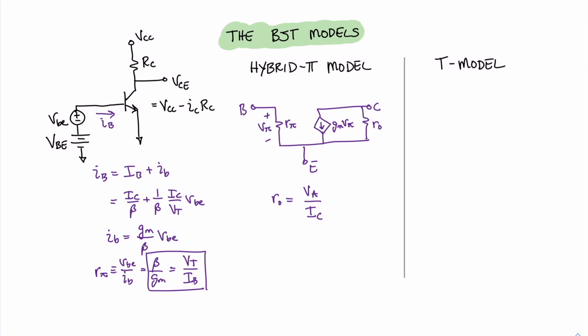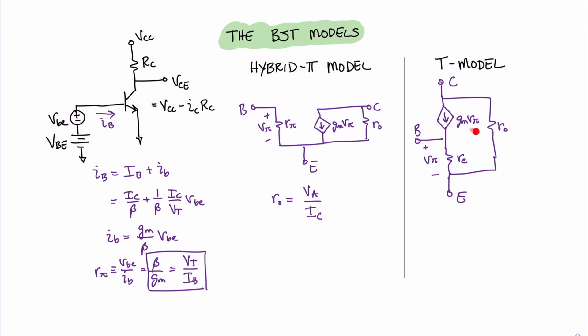We can also develop the T model for the BJT. It again uses a dependent current source dependent on V pi and includes our output resistor. One difference is an additional resistance called little r e, arising from the current through the base. The relationship between base current and emitter current reflects alpha, so little r e equals alpha over GM, which can also be written as thermal voltage VT over capital I sub E. With that, we have developed our hybrid pi and T models for the BJT amplifier. In our next video, we'll use these models to analyze both MOSFET and BJT transistor amplifier circuits. Until then, that concludes this video of Unwired Learning.